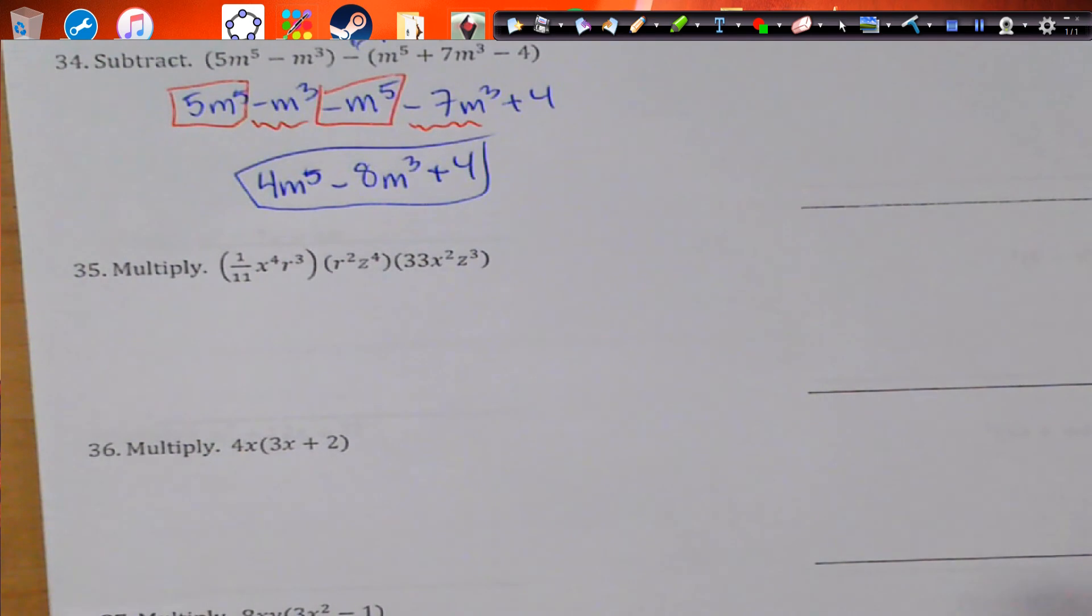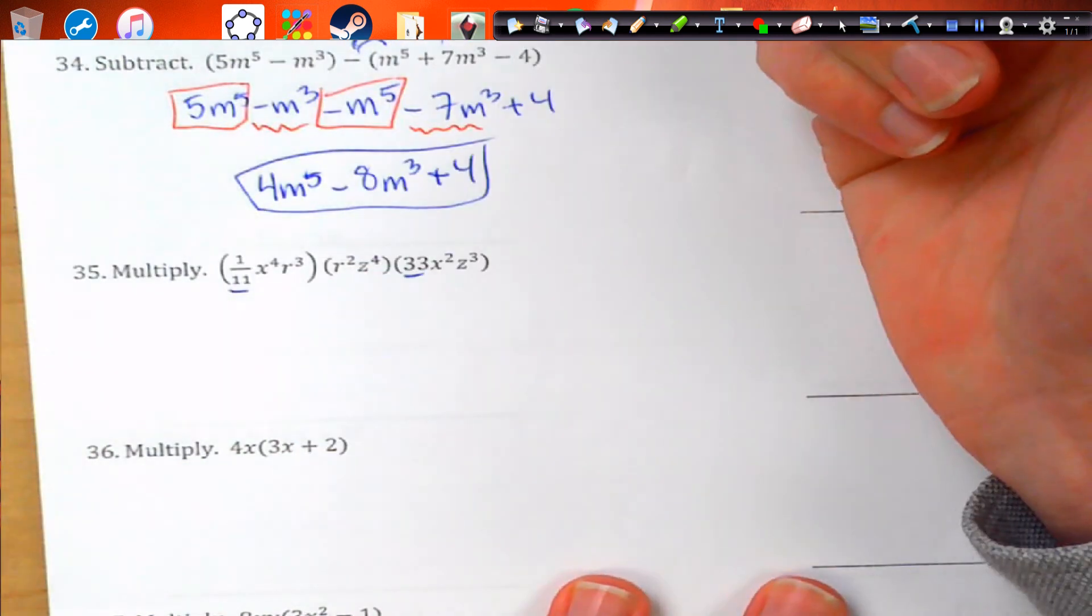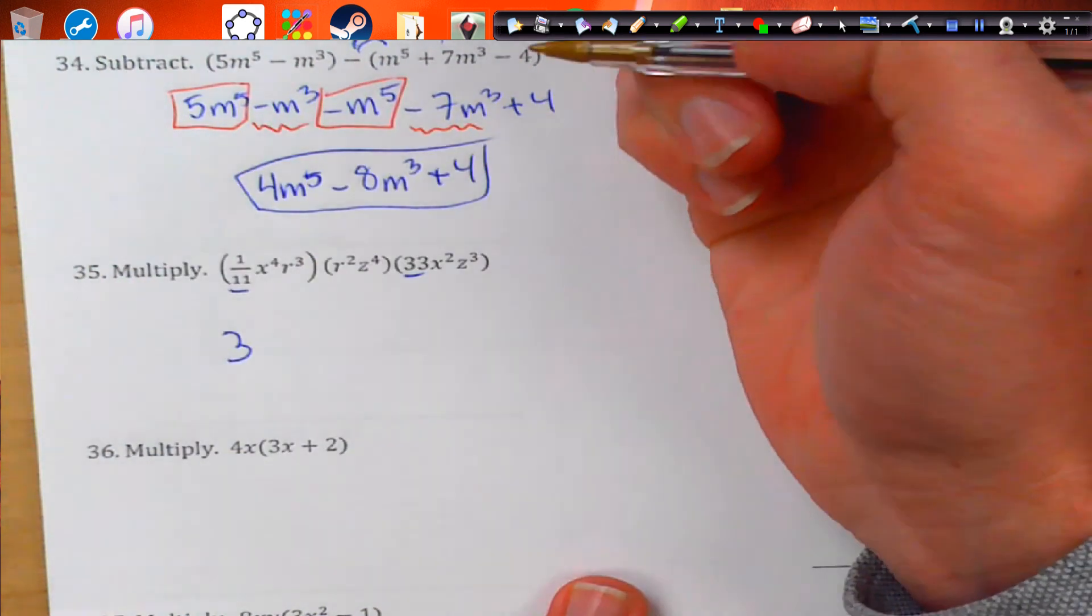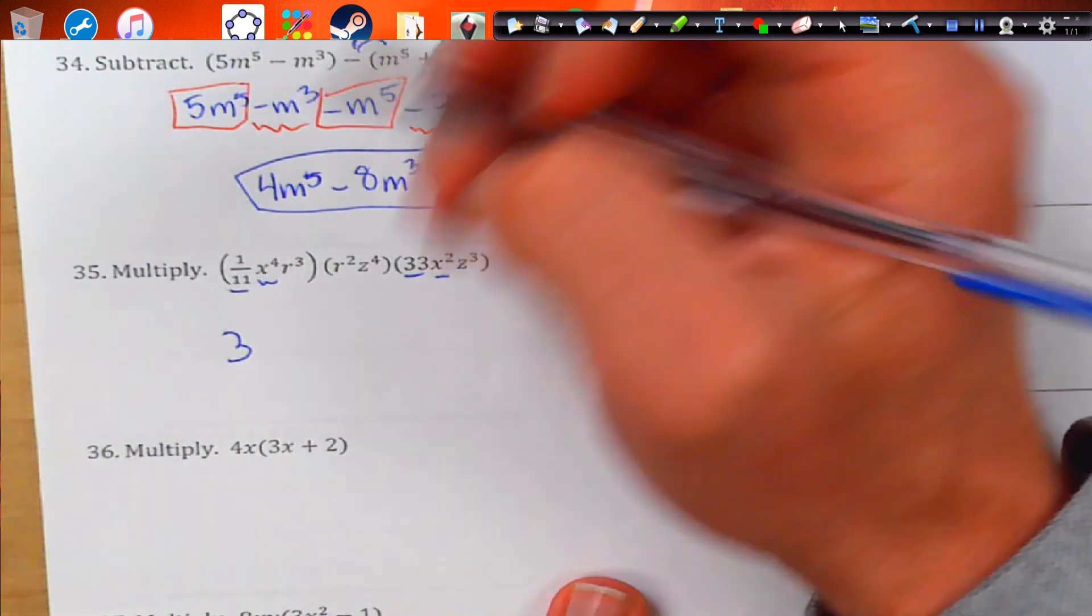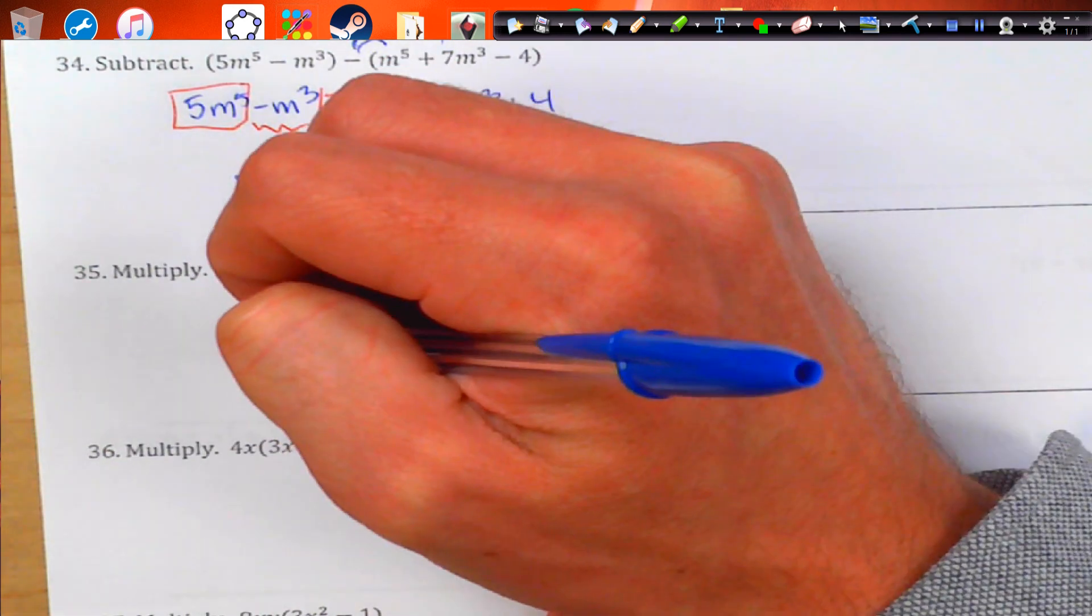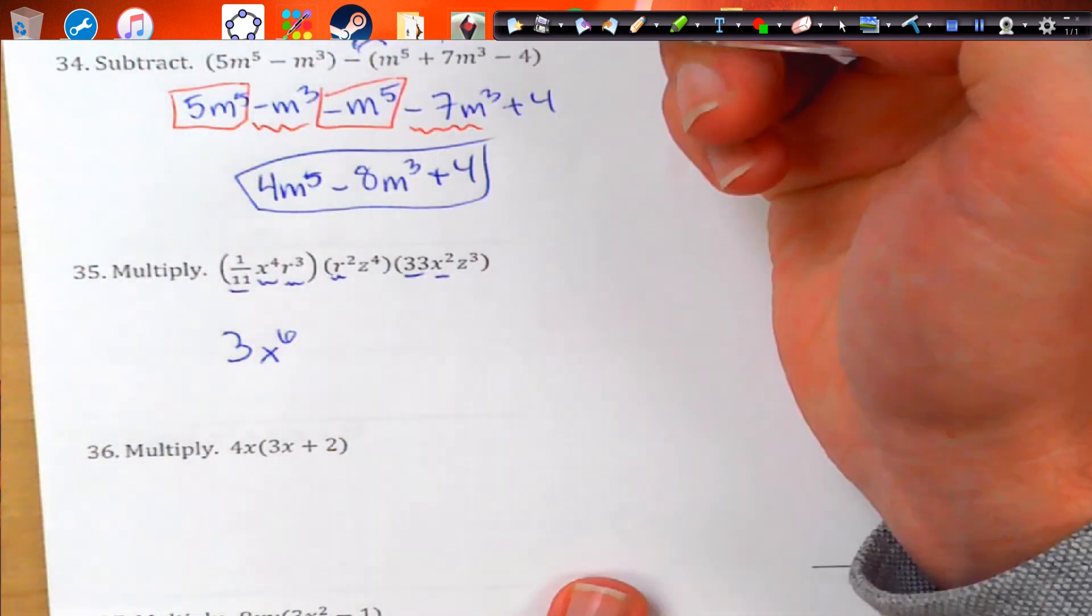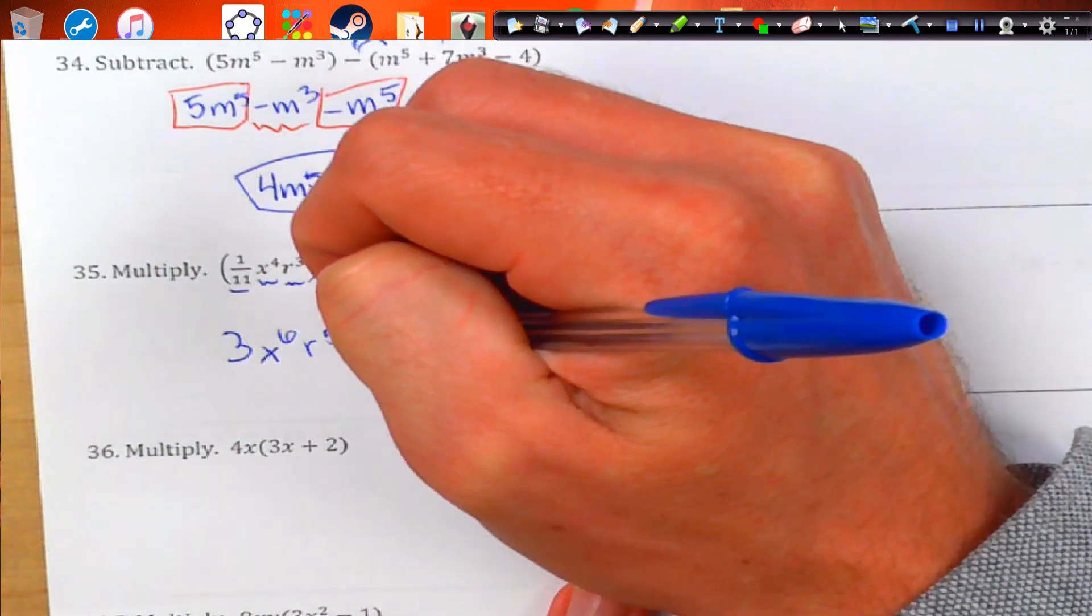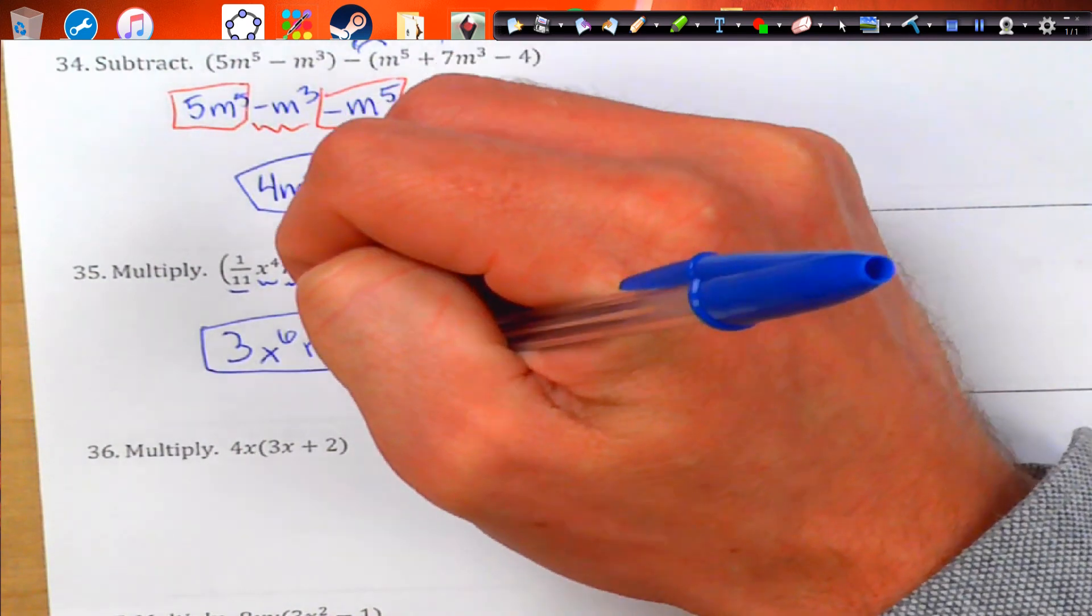So when we multiply our exponents, we're going to act a little bit differently. So here we're going to multiply the whole numbers. So 1/11 times 33. That's basically dividing 33 by 11. We're going to end up with just 3. Next, we're going to look at the x's. x to the 4th times x to the 2nd. This is going to become x to the 6th. The exponents add. And then r to the 3rd, r to the 2nd. This is going to become r to the 5th. And z to the 4th and z to the 3rd is z to the 7th.